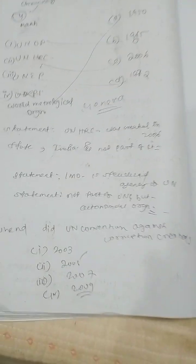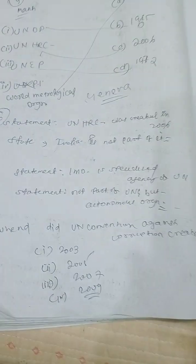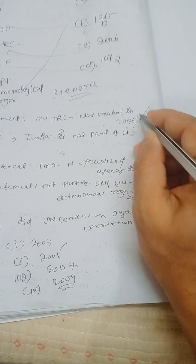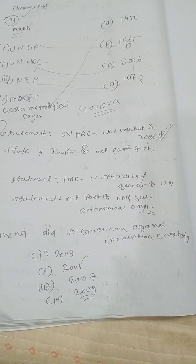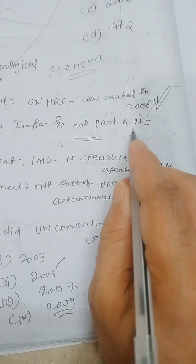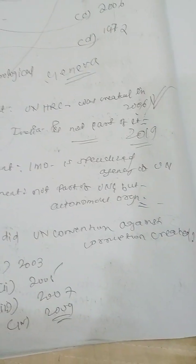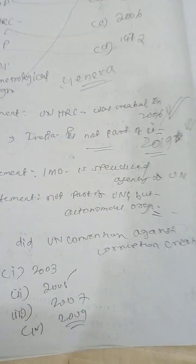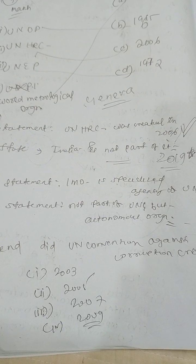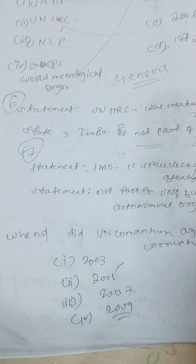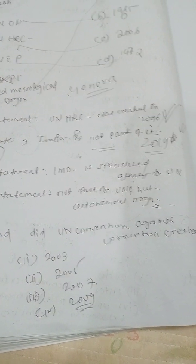Question six is a statement-based question. Statement one: the United Nations Human Rights Council was established in 2006 — this is correct, as we already discussed. Statement two: India is not part of it — this is incorrect. India is part of the United Nations Human Rights Council. India became a member in 2019.